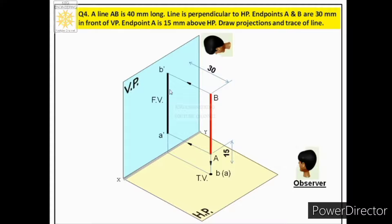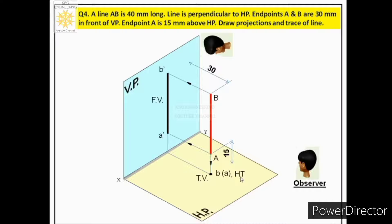The front view of the line is above the top view, and the top view is below the front view. An important point is the trace of the line. Since the line is perpendicular to HP, if we extend it, it will intersect the horizontal plane, giving us the horizontal trace. Interestingly, when we extend this perpendicular line it intersects its own top view, so the top view itself is called the horizontal trace.